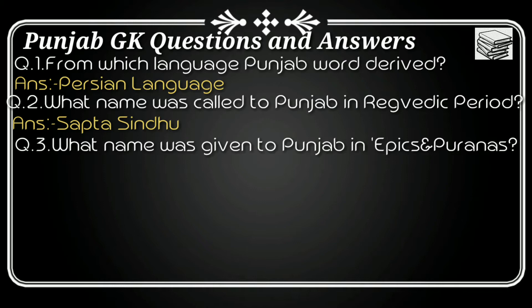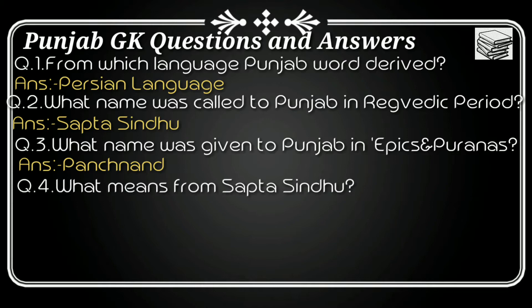Question number three: What name was given to Punjab in epics and Puranas? The answer is 'Pancha Naad,' which means five rivers. Question number four: What does 'Sapt Sindhu' mean? It means seven rivers — 'Sapt' means seven and 'Sindhu' refers to rivers.